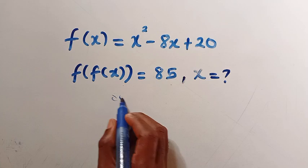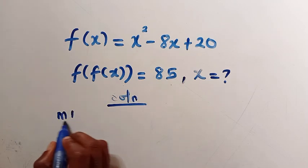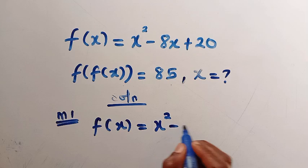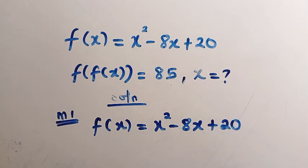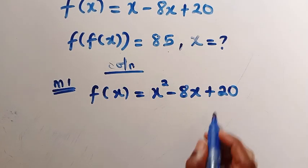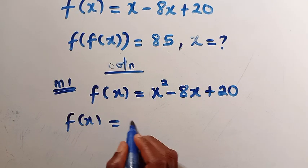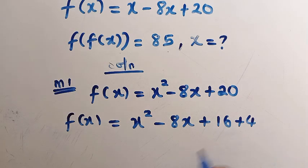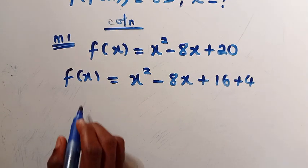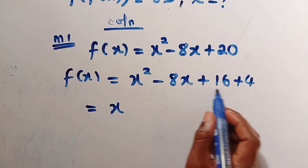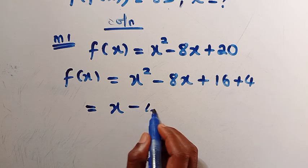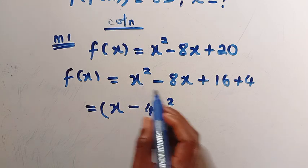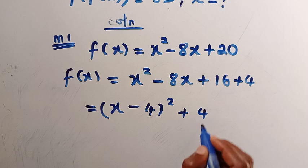Let's get started with the first method. From the function f of x which equals x squared minus 8x plus 20, I break this down by completing the square: f of x equals x squared minus 8x plus 16 plus 4. So 16 plus 4 gives us 20, and x squared minus 8x plus 16 gives us x minus 4 raised to power 2, plus 4.